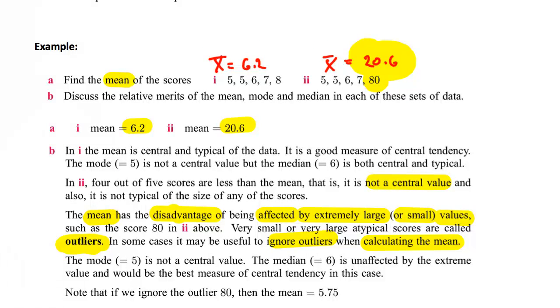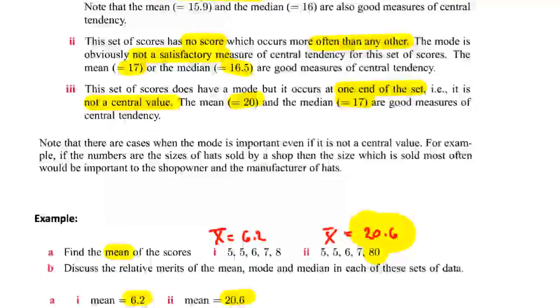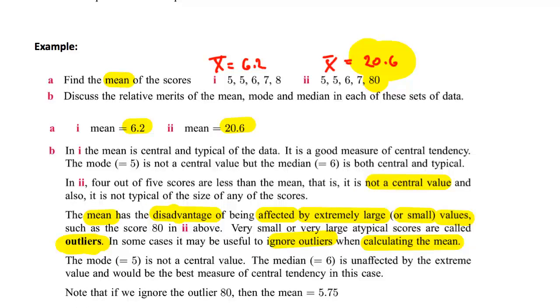All right, so just one last thing then in this section - note that if we ignore the outlier then the average becomes 5.75, which in that case is a good reflection of it. So you've got to just study the numbers and the main question you've got to ask every time is: does this thing that I worked out - whether it be mean or mode or median - does it actually give me a good idea of a number that represents the middleness of those scores? If it doesn't, then you probably won't use it for giving that concept of middleness.